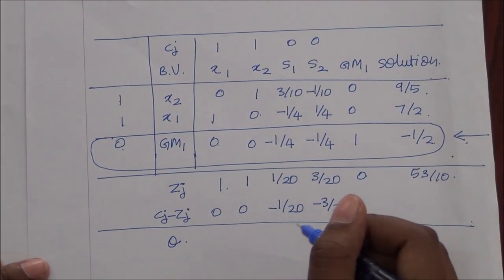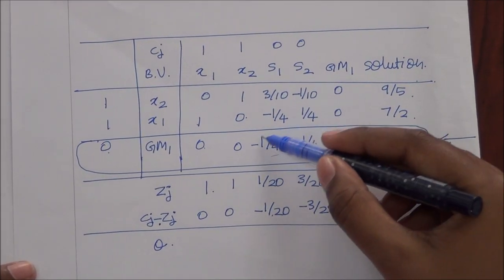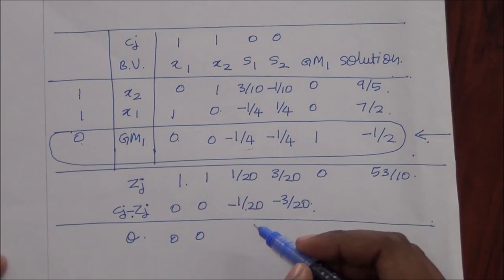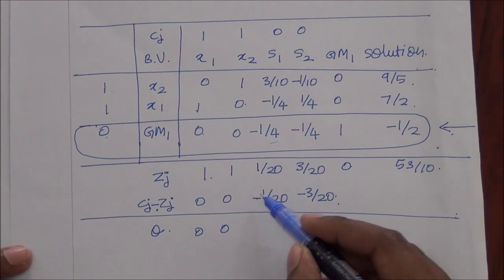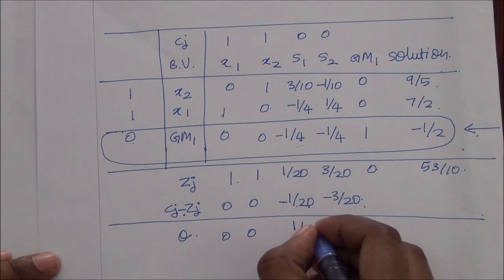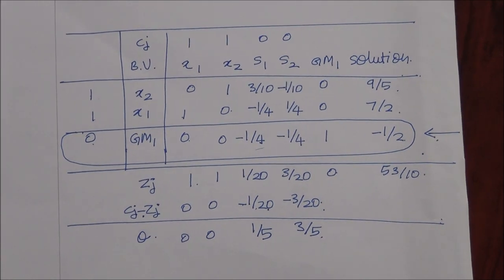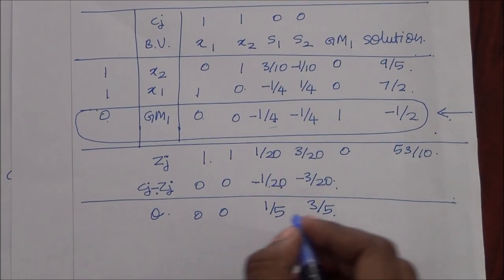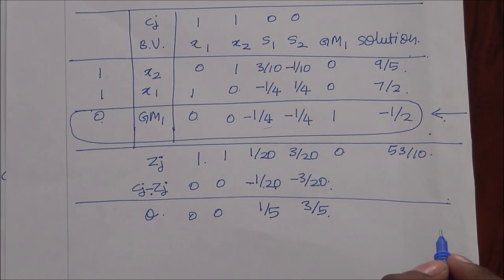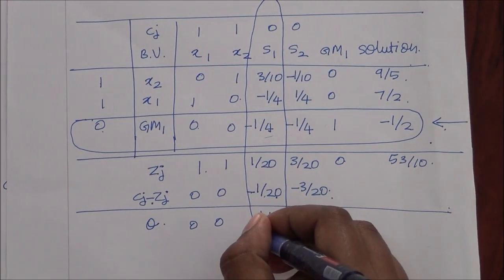The value of theta is computed as cj minus zj divided by the corresponding value in the pivot row. Here, theta equals minus 1 by 20 divided by minus 1 by 4, giving us 1 by 5. Similarly, another theta value is 3 by 5. We choose the pivot column as the least value of theta — here 1 by 5 is lesser — so this column becomes the pivot column.